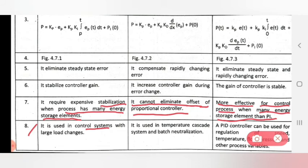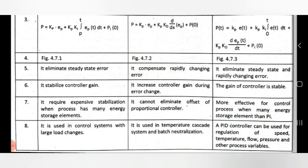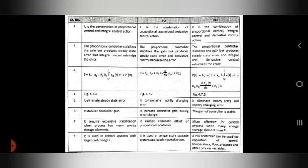The eighth point is application. PI is used in control systems with large load changes. PD is used in temperature cascade systems and batch neutralization processes. PID can be used for regulation of speed, temperature, flow, pressure, and other process variables. This completes the comparison of PI, PD, and PID controllers.